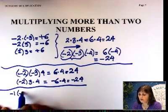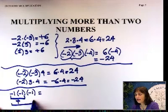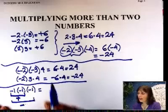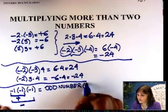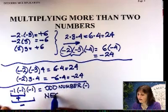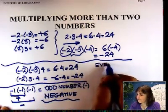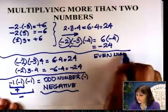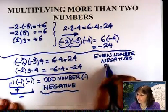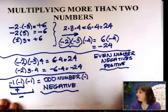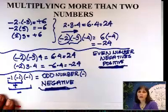Let's generalize: when multiplying three negatives — negative 1 times negative 1 is positive, times negative 1 ends up negative. So when I have an odd number of negatives, I end up with a negative answer. If I have an even number of negatives, I end up with a positive answer. I just need to count how many negatives I'm multiplying: even number of negatives gives positive, odd number gives negative.